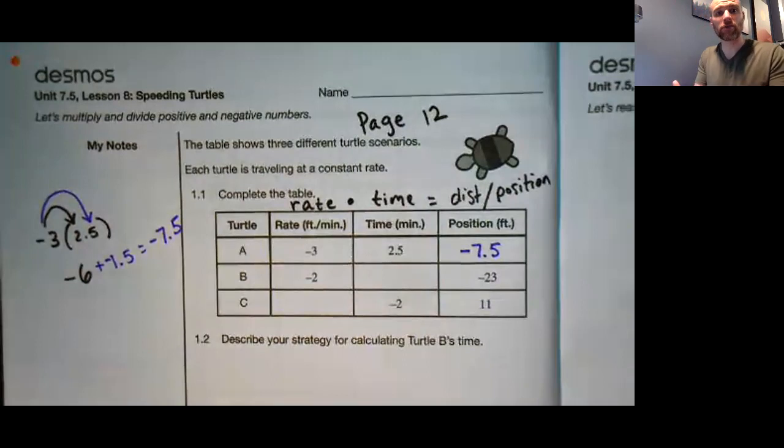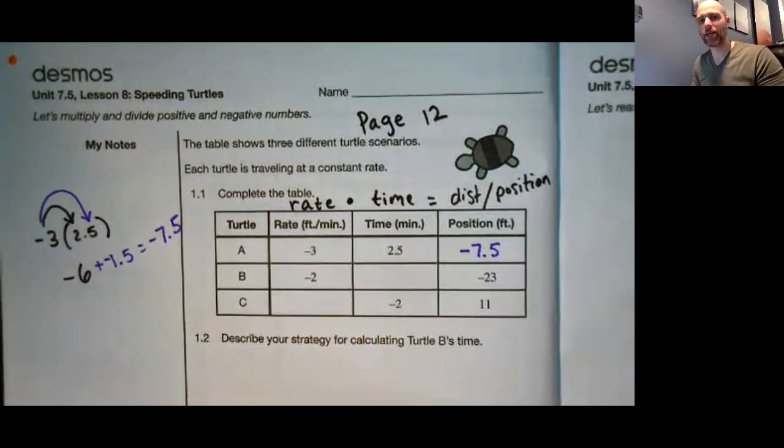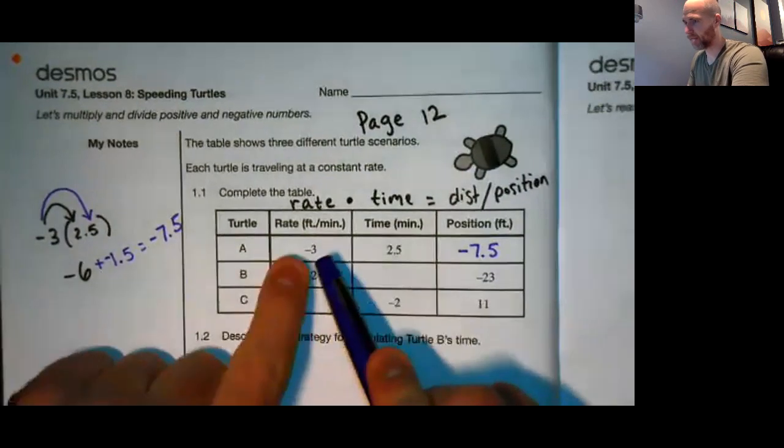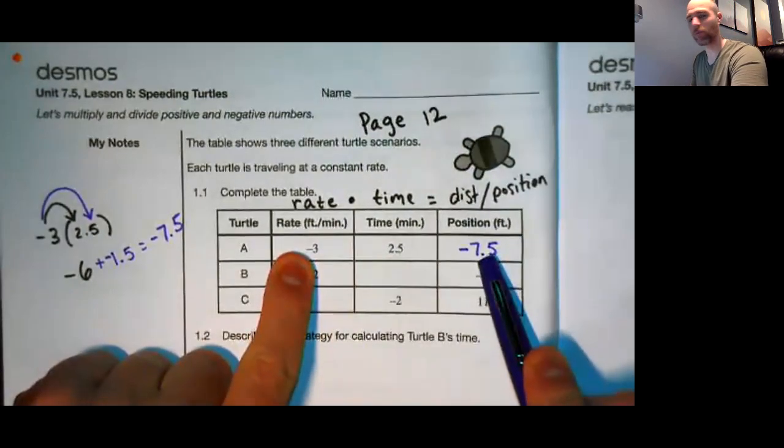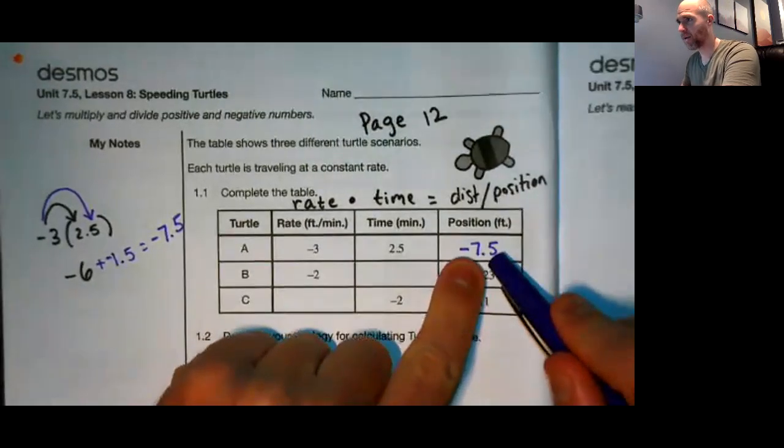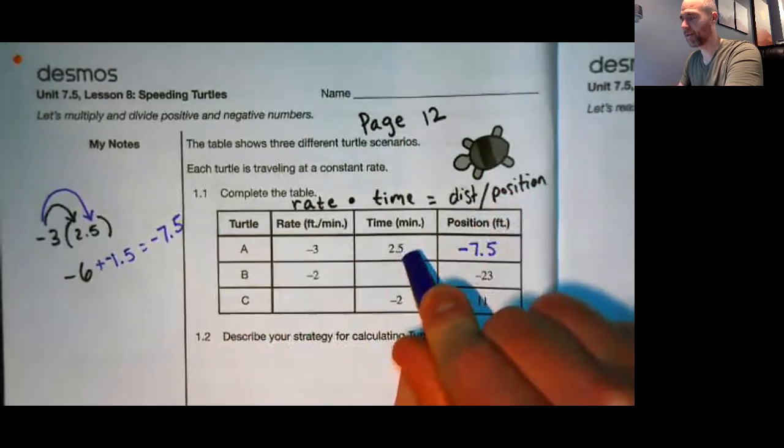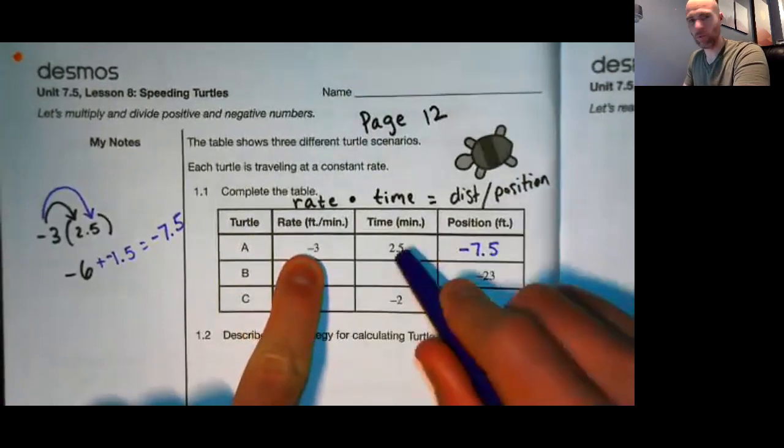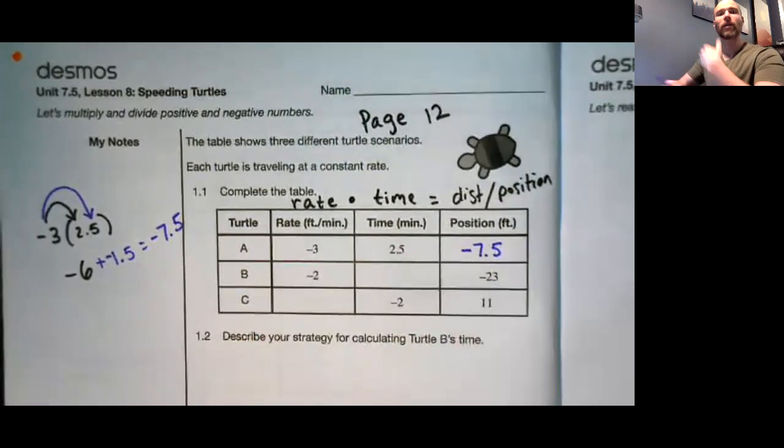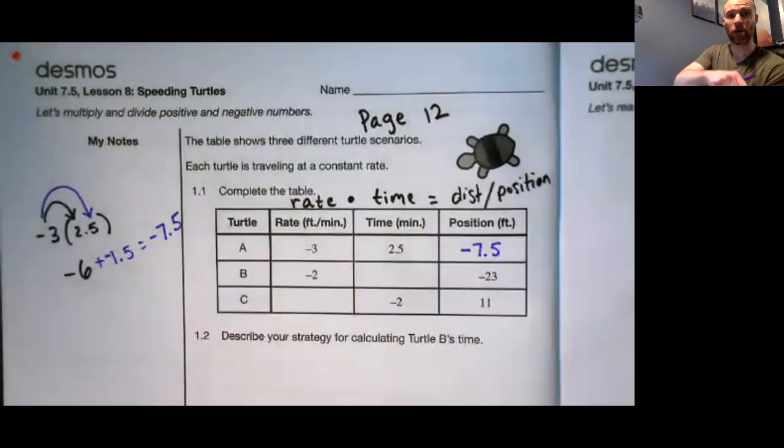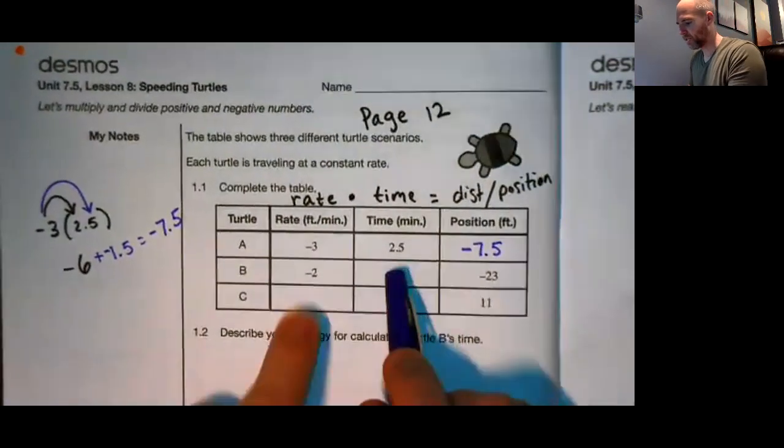Now we have to think in terms of inverse operations. Remember at the beginning of this video, I said that multiplication and division are essentially the same operation. But one thing we can use them both for is the fact that they work in inverse of each other. If you know that negative 3 times 2.5 equals negative 7.5, well you can also divide back to get either of the other two numbers you started with. That's what we mean when we say inverse operations.